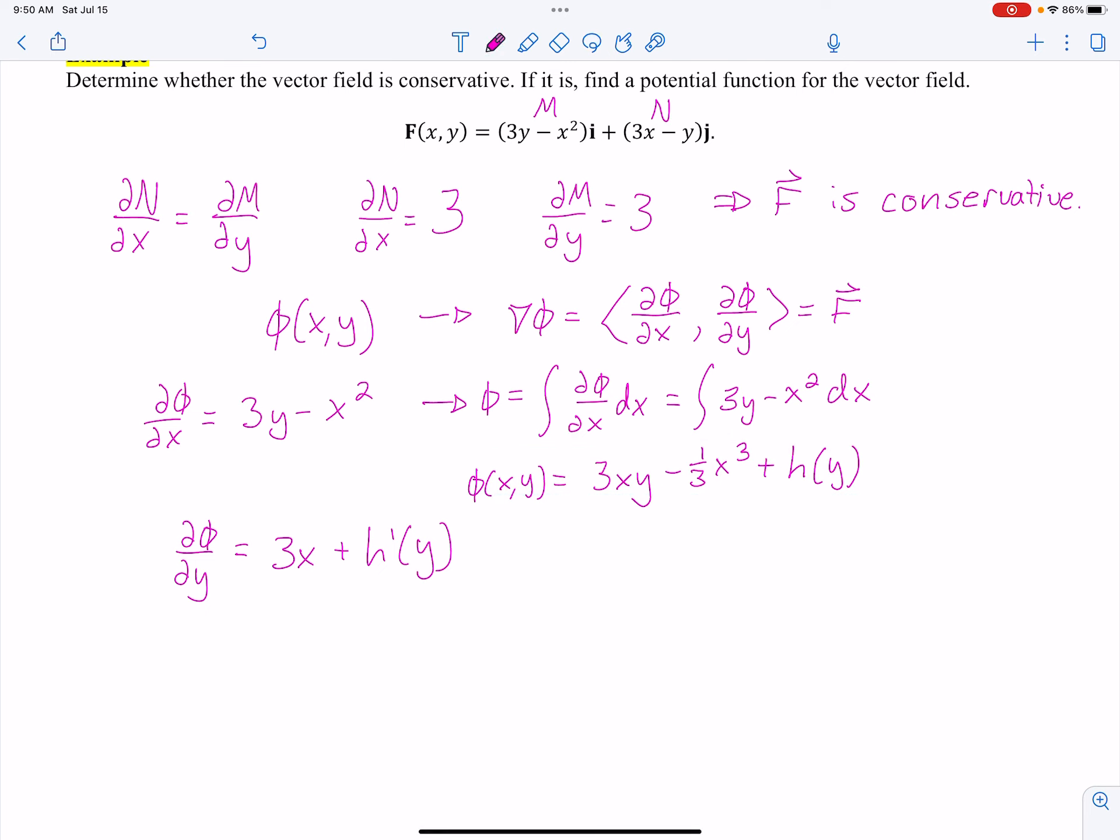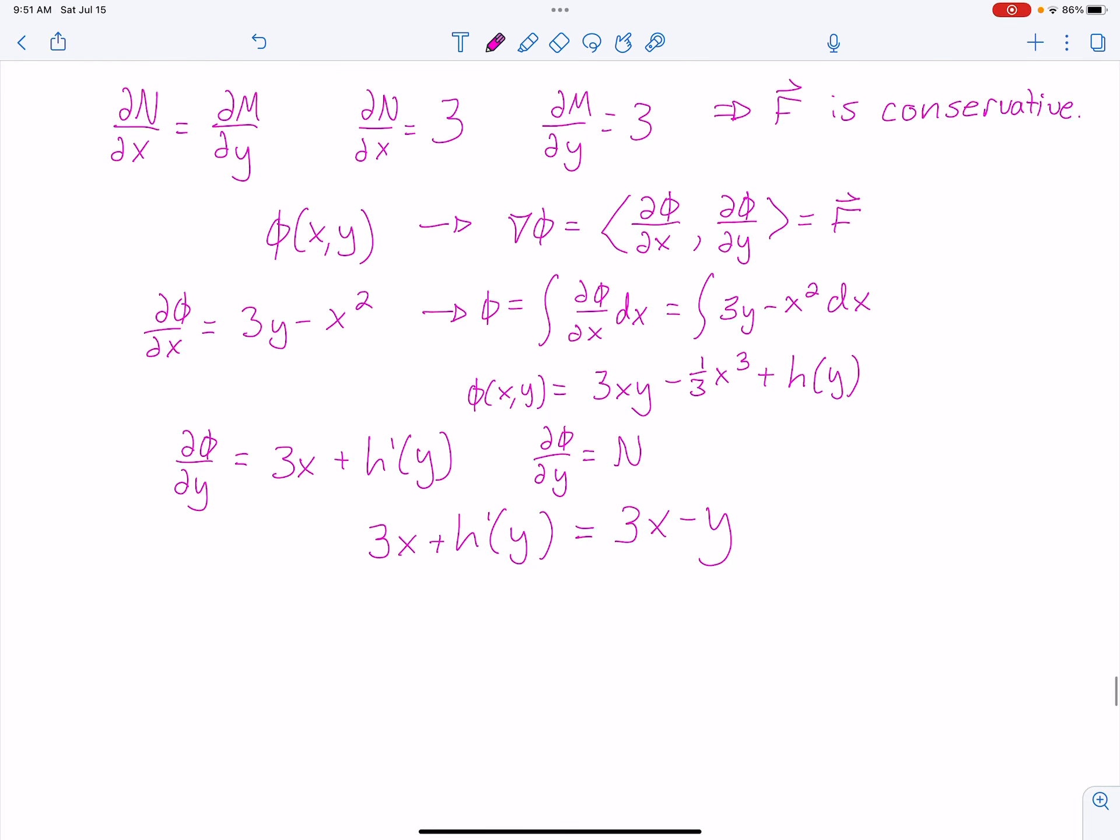Well, if you remember though, I also know that the partial of phi with respect to Y is equal to N, right? That's the way that the potential function thing works. So I can set these two things equal. And then N, I'm going to go ahead, I'm not going to write N, I'm going to write what it is. That's really nice, because there's 3X on both sides. That works out quite a bit.